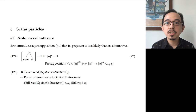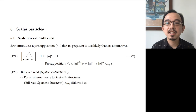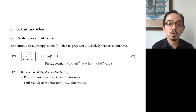This seems to make sense for basic cases of even, like the classic example 'Bill even read Syntactic Structures.' For this to be felicitous, it has to be in a context where reading Syntactic Structures is somehow less likely to be read. For all alternatives x to Syntactic Structures, the proposition that Bill read Syntactic Structures is less likely or more noteworthy than that Bill read x.